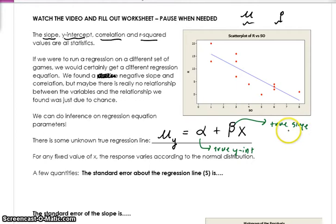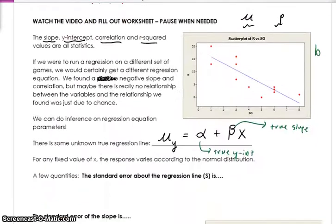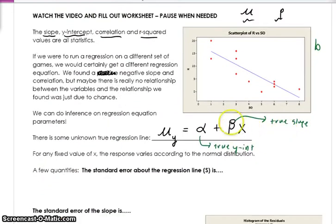So when we estimate the slope from our sample, it's just an estimate. We actually call it b. So in this case, b was negative 2.58. But that was just an estimate for this true slope. If I were to take every game ever played and every game that could ever be played, and I look at the relationship between these two variables, there is some unknown beta. Of course, this is not something that we can do.